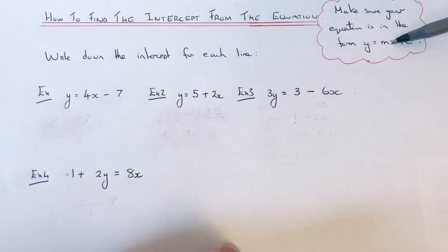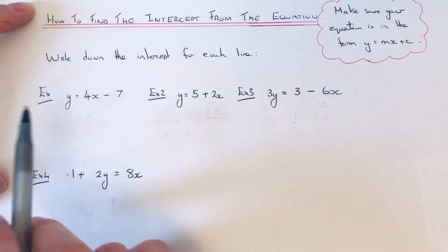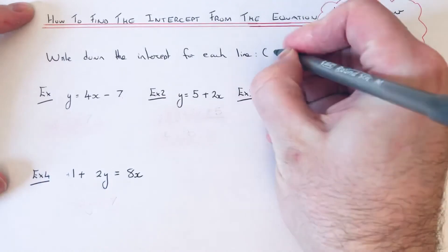You can just ignore this term here because that's the gradient, which is m. So let's have a look at the four examples that we have. We need to work out the intercept for each line.